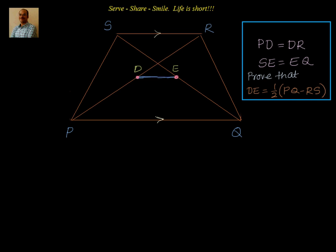How do we approach this problem? We see that there are two midpoints. We know SE equals EQ, and PD equals DR. What we have to prove also involves DE equal to half of something, so this tells me I have to apply the midpoint theorem. But to apply the midpoint theorem, we need a triangle in which D and E are midpoints. We already have SQ for which E is the midpoint, so SQ is one side of that triangle. Now, how do I prove that D is also a midpoint of another side? For that, I have to take SD and extend it so that it cuts PQ.